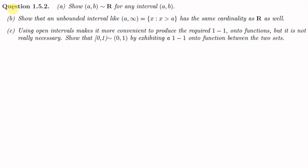We have a question here which has three parts. Part A: show that open interval (a,b) is similar to ℝ for any open interval (a,b). Part B: show that an unbounded interval like (a,∞), which is the set of all x such that x > a, has the same cardinality as ℝ. Part C: show that the interval [0,1) is similar to (0,1) by exhibiting a one-to-one onto function between these two sets.